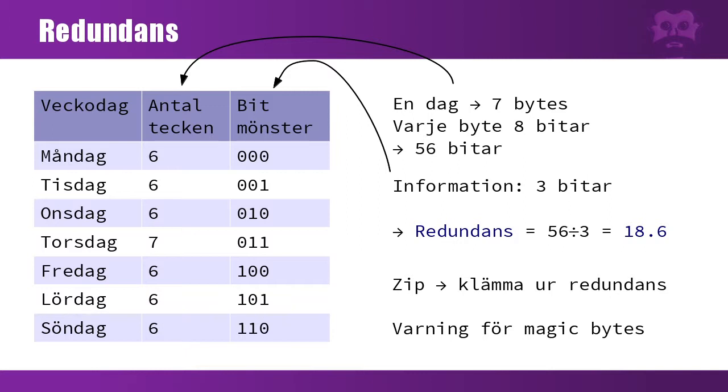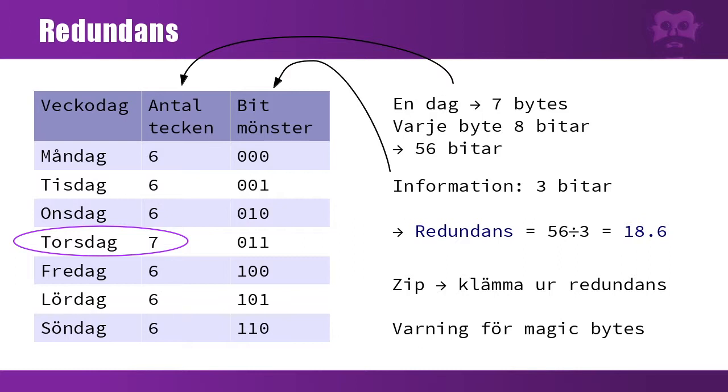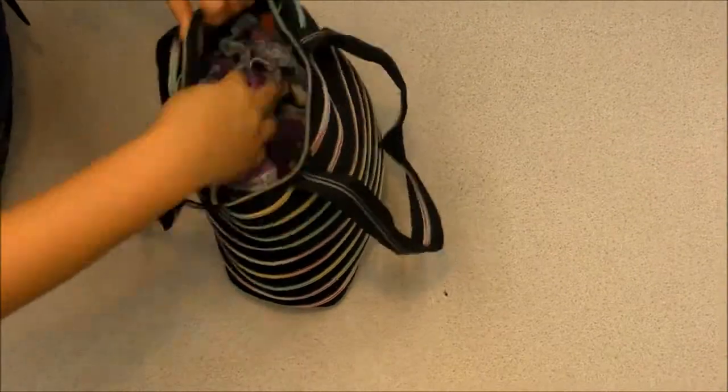Redundancy means excess information. For example, consider weekdays. The longest day name like Thursday is seven characters, so to store any weekday, you might reserve seven characters. Each character in ASCII takes eight bits, so altogether it's 56 bits to store a weekday. Ideally, it would only take three bits—with three bits you can get seven different combinations. So the redundancy is 56 divided by 3 bits, which equals 18.6.